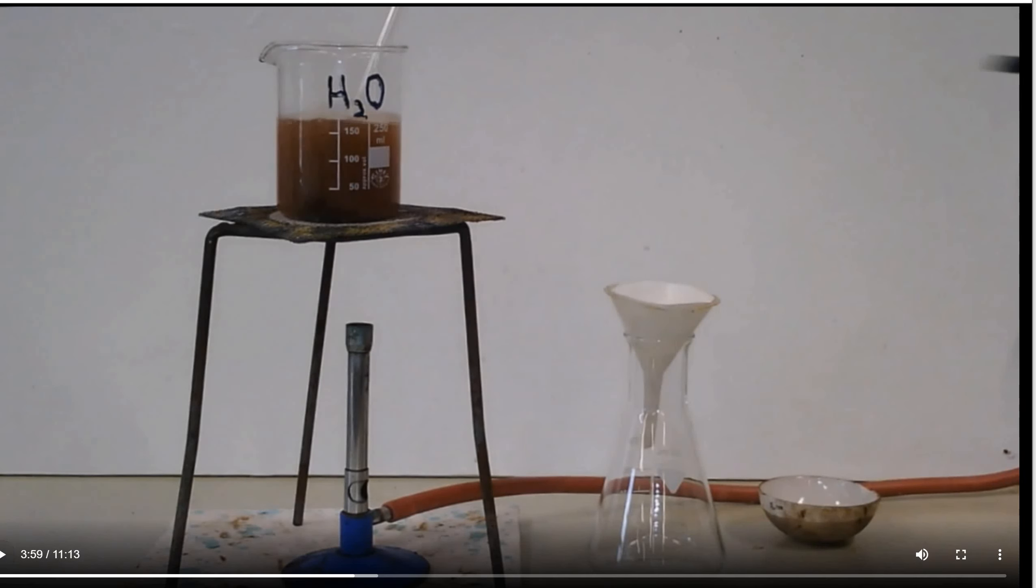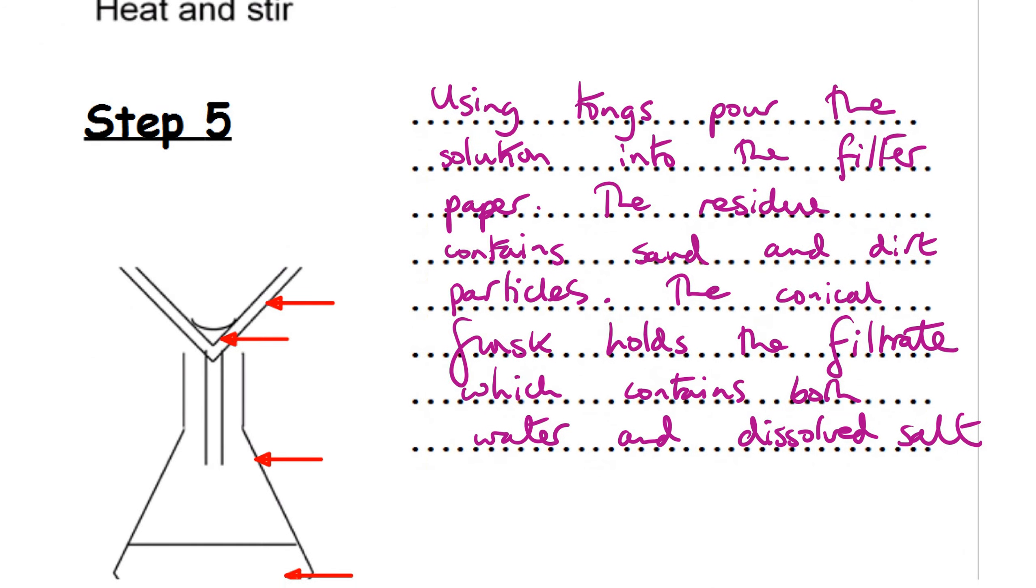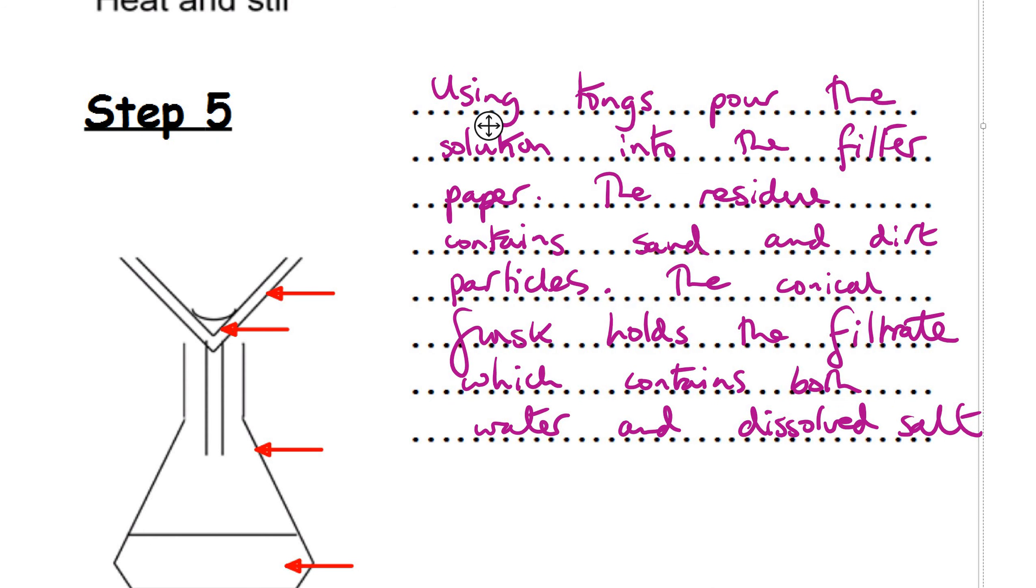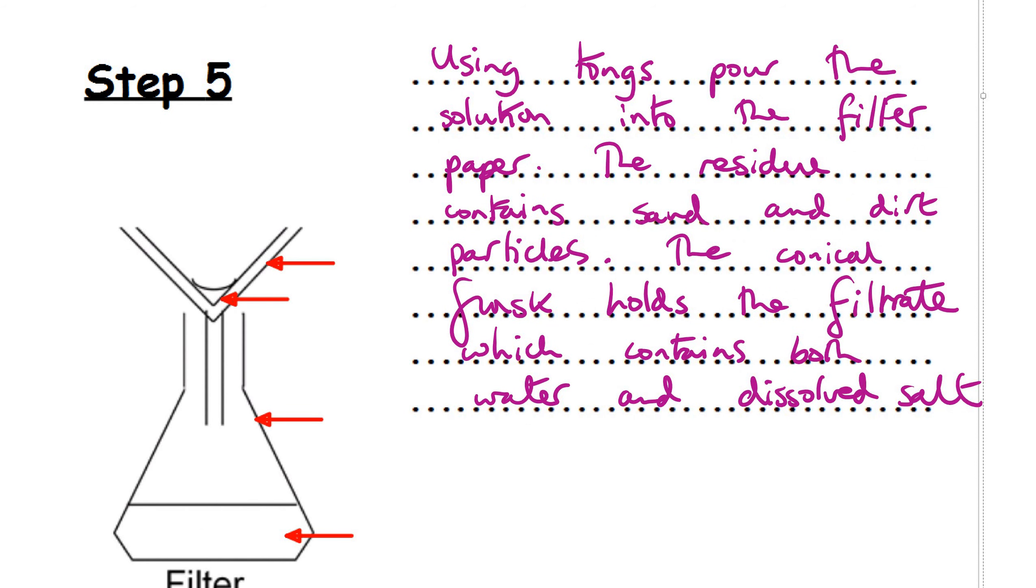You can see the Bunsen flame is on. And something's going to happen. Step five. Using tongs, pour the solution into the filter paper. So the filter. That's the funnel. Now this here is the filter paper. Label these up, please. Write all this information down. Now the residue contains sand and dirt particles. Where's the residue? It's this bit in here. So this is the residue. Insoluble. We don't want that.